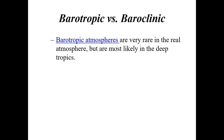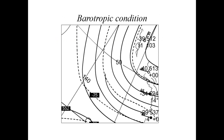In a barotropic atmosphere the height contours and isotherms are parallel to each other. With no temperature advection and very weak temperature gradients, you get a very weak wind flow and no vertical wind shear — no change in wind speed or direction with height — and no thermal wind. Barotropic atmospheres are very rare in the mid-latitudes where we live, because there's usually some frontal system or high or low pressure system allowing air masses to collide.